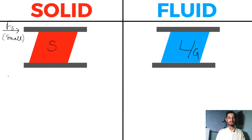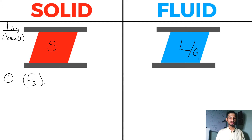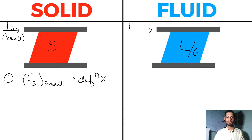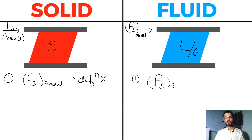So the first thing is clear: if I am applying a very small shear force on a solid, I do not see any deformation at all. But in the case of fluid, if I apply this same small shear force, I will certainly see some deformation. So the first point is clear — if I apply a small shear force in the case of liquid or gas, I will see a deformation.